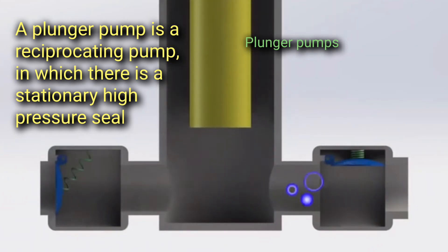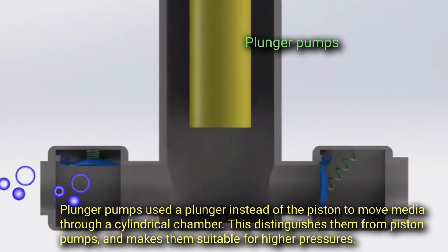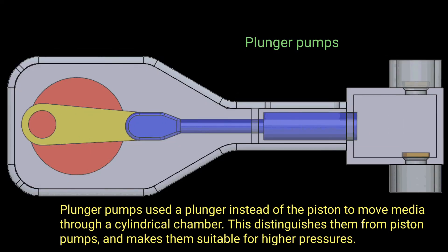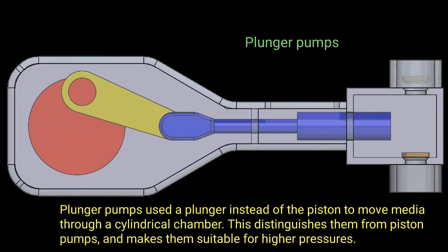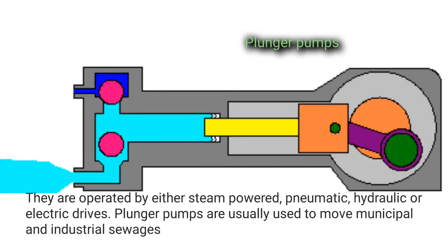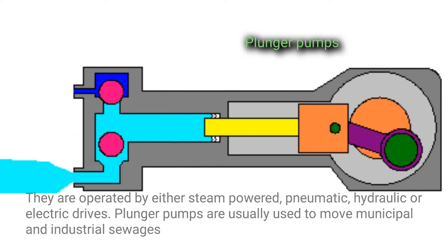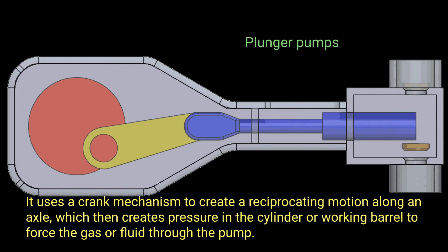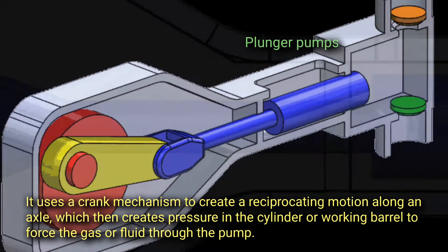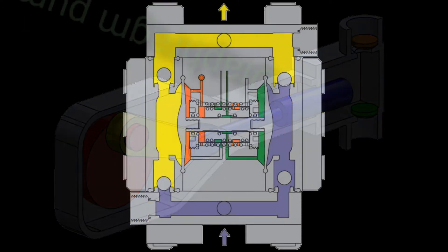A plunger pump is a reciprocating pump in which there is a stationary high-pressure seal and a smooth cylindrical plunger sliding through the seal. Plunger pumps use a plunger instead of a piston to move media through a cylindrical chamber. This distinguishes them from piston pumps and makes them suitable for higher pressures. They are operated by steam-powered, pneumatic, hydraulic, or electric drives. Plunger pumps are usually used to move municipal and industrial sewage, using a crank mechanism to create reciprocating motion along an axle to force fluid through the pump.